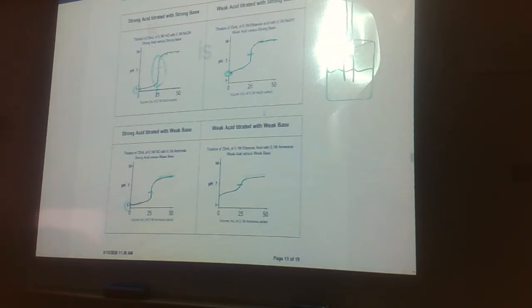Anticipate graphs like this on a multiple choice. They'll tell you something about a titration and you'll choose the graph that would match the titration. Anticipate a titration problem in the free response, something about titration.